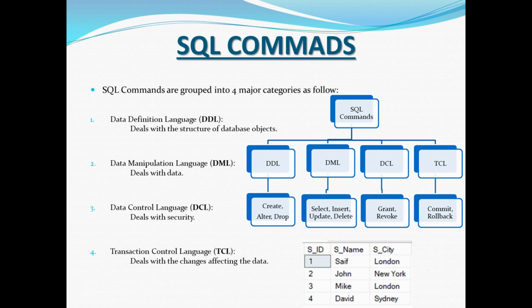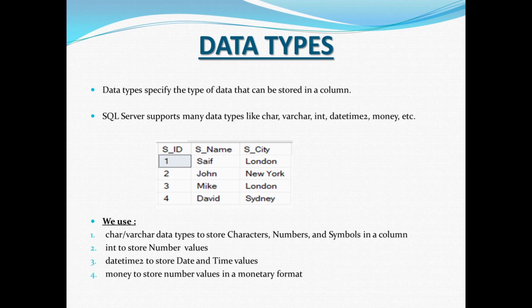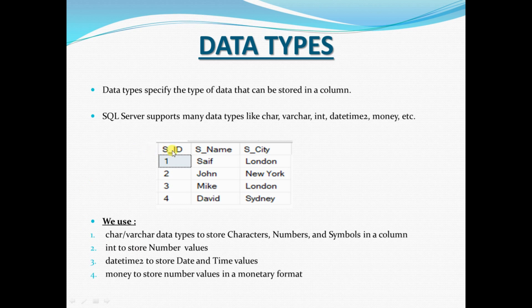Data types specify the type of data that can be stored in a column. SQL Server supports many data types like char, varchar, integer, date, time, money, etc. When creating a table you must specify column names and the data type for each column. For example, the Student ID column stores numbers, so we specify the integer data type — int — for that column.